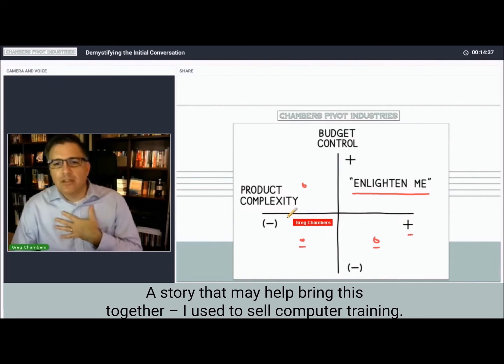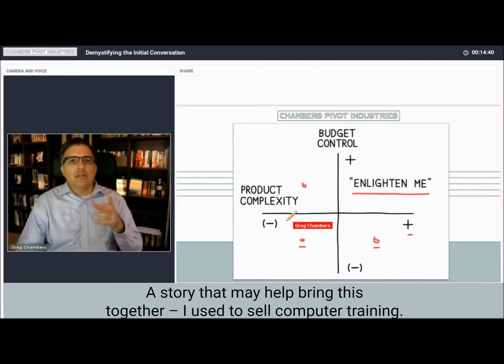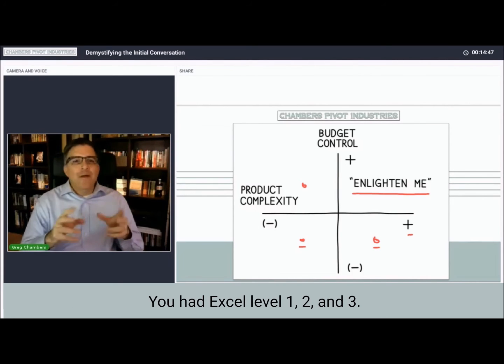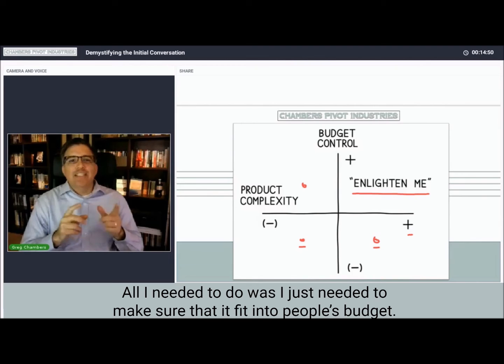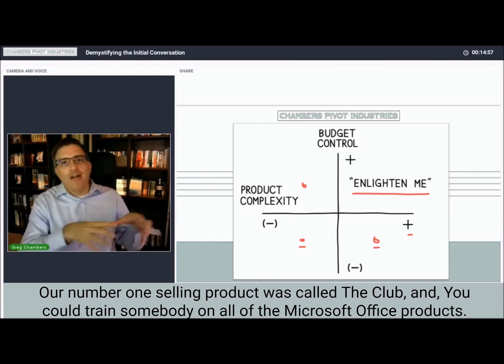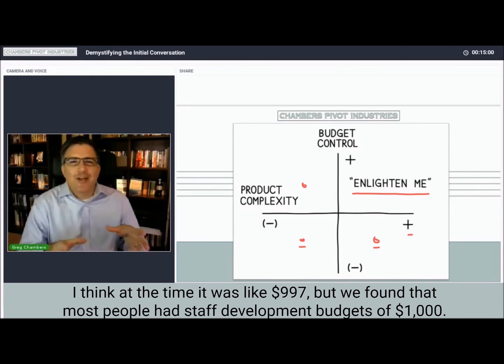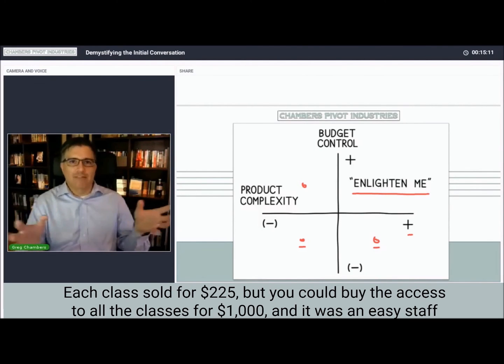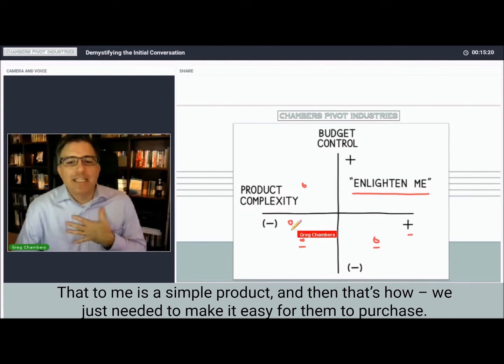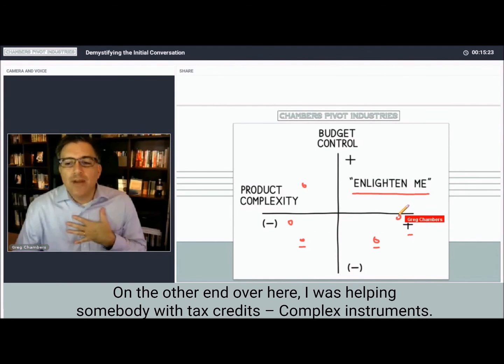Here's a story that may help bring this together. I used to sell computer training, and one of the things we sold was Excel classes - Excel level one, two, and three. It's a pretty simple product. All I need to do is make sure that it fit into people's budget. So our number one selling product was called the club. You could train somebody on all of the Microsoft Office products. I think at the time it was like $997, but we found that most people had staff development budgets of $1,000. Each class was $225, but you could buy access to all the classes for $1,000, and it was an easy staff development expense they could just take on. That to me is that simple product, and we just needed to make it easy for them to purchase.